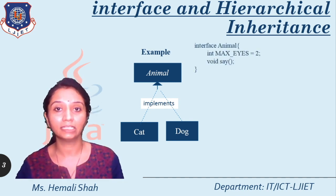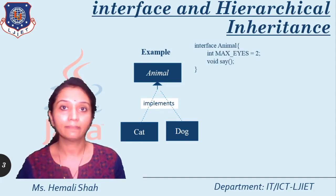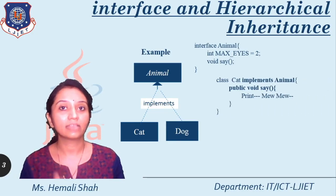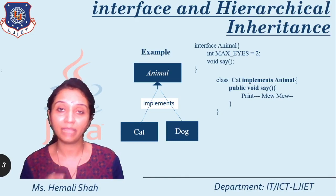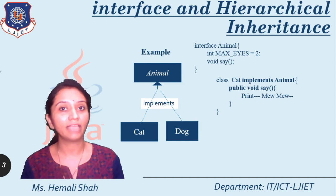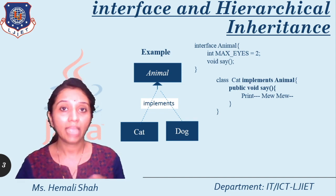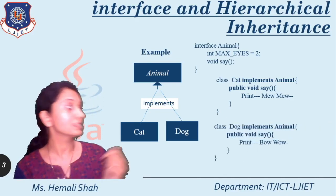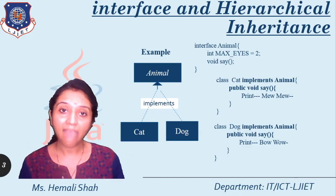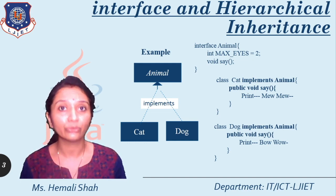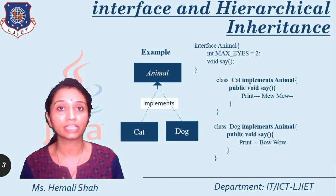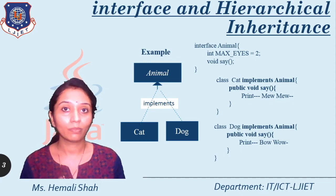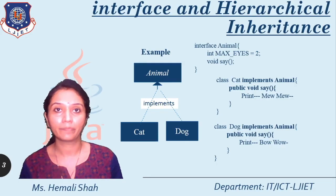We have already implemented the animal interface and created the cat class which implements the animal interface. Inside that, we have already implemented the say function — the say function prints 'meow meow' for all cat objects. Now for the hierarchical inheritance, you have to add a new class: class Dog implements Animal. This class dog implements animal, and you have to override public void say. The dog says 'bow wow', so you have to implement the say function in dog class to print 'bow wow'.